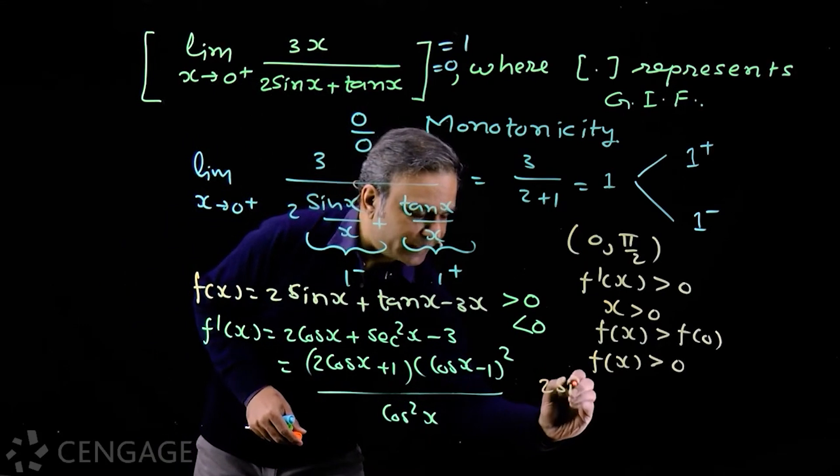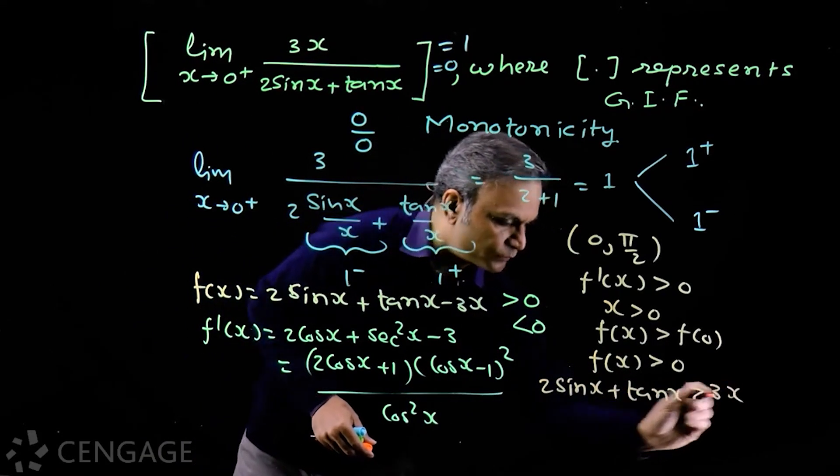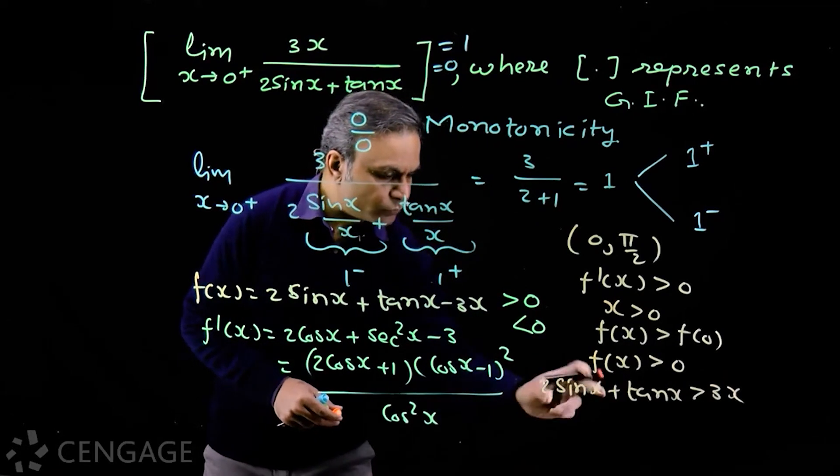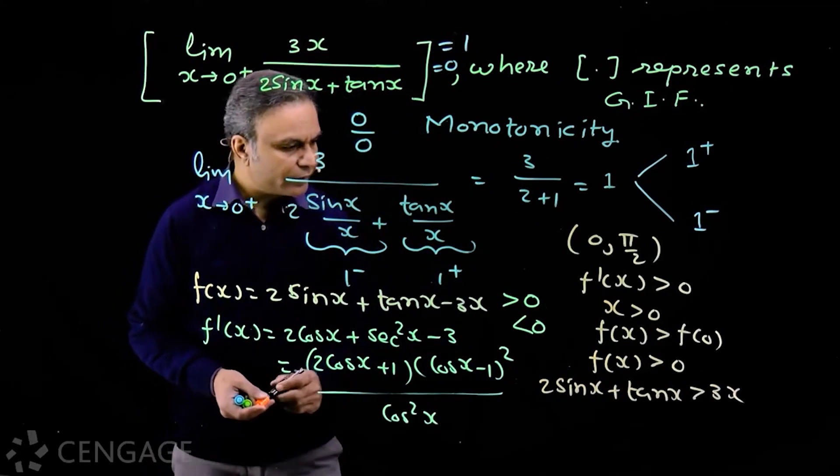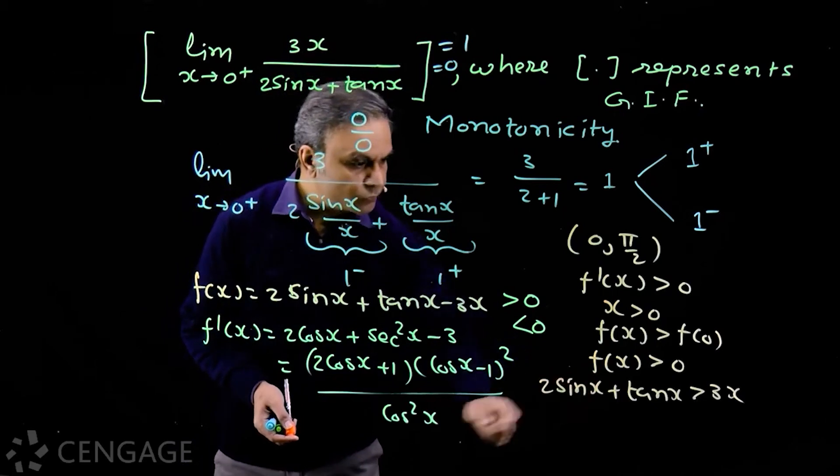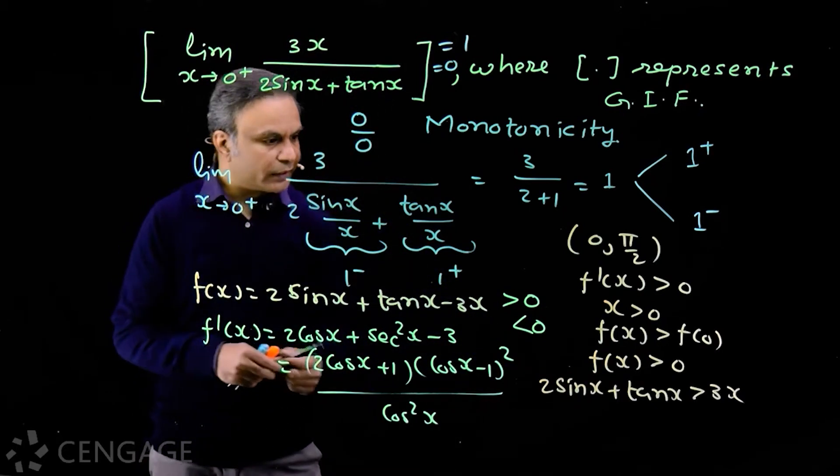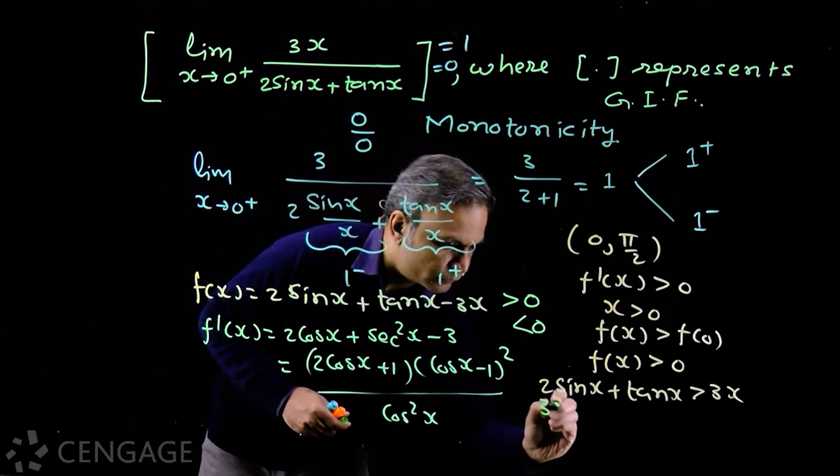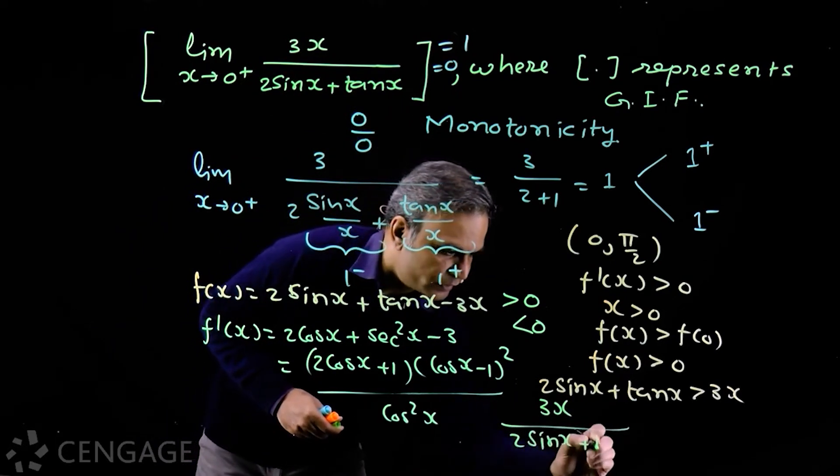That means 2 sin x + tan x is greater than 3x. Now 2 sin x + tan x is positive, also 3x is positive, so we can divide both sides by 2 sin x + tan x without altering the sign of inequality. And we find that 3x over (2 sin x + tan x) is less than 1.